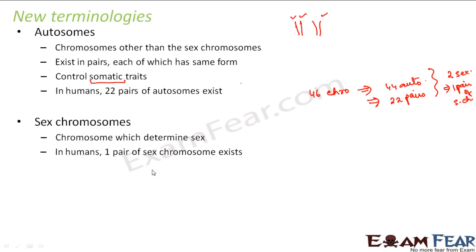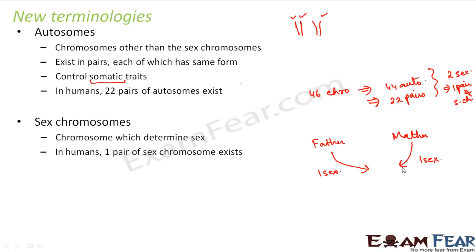How is the sex determined by these chromosomes? During reproduction, the father as well as the mother both contribute equally. The father contributes 22 autosomes and one sex chromosome. Similarly, the mother contributes 22 autosomes and one sex chromosome. The two sex chromosomes together decide whether the child will be male or female — we will see exactly how in the next slide.